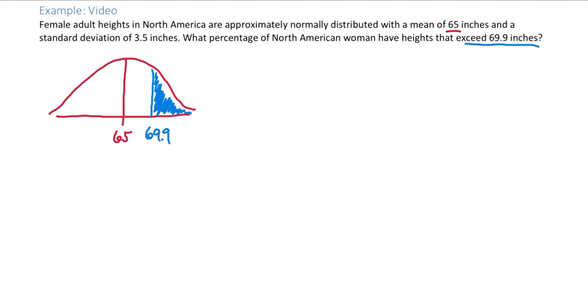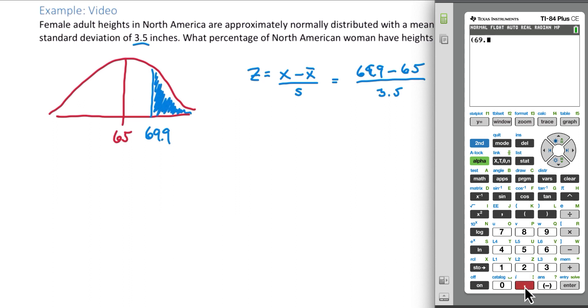Up next we need to find the z-score that corresponds to 69.9. Remember the formula is x minus x-bar over s. We have the data item 69.9 minus the mean 65 divided by the standard deviation, which we were told is 3.5. 69.9 minus 65 divided by 3.5 gives us a z-score of 1.4.